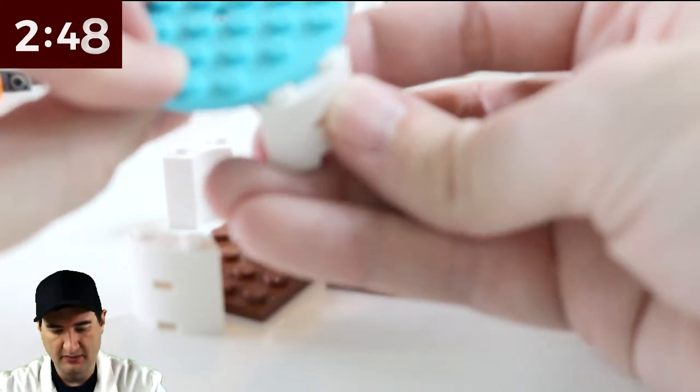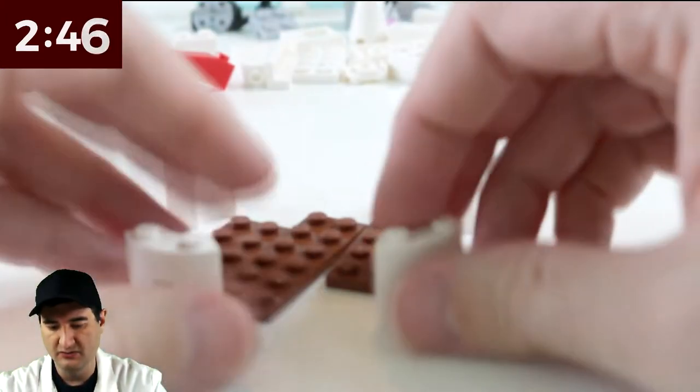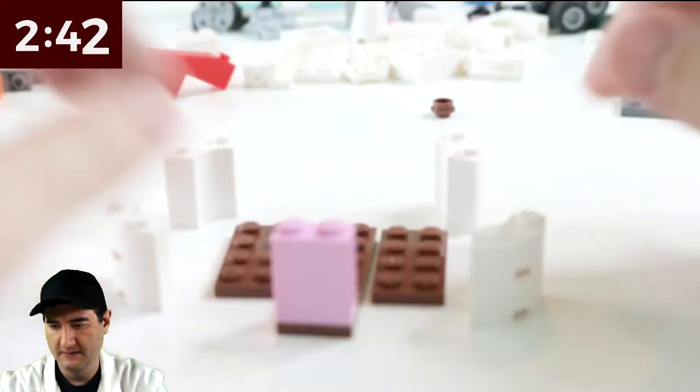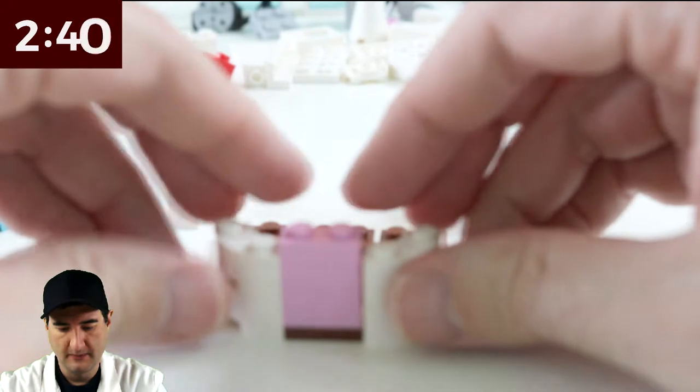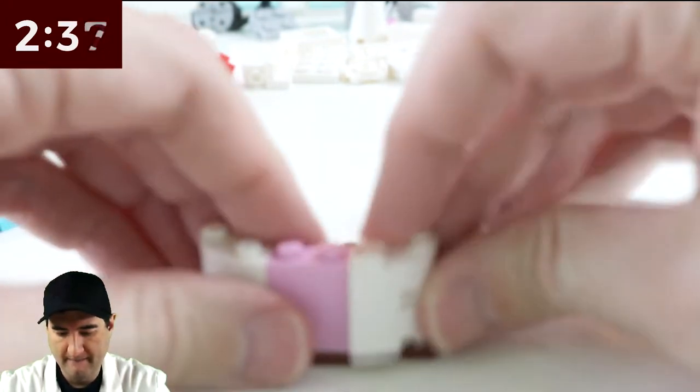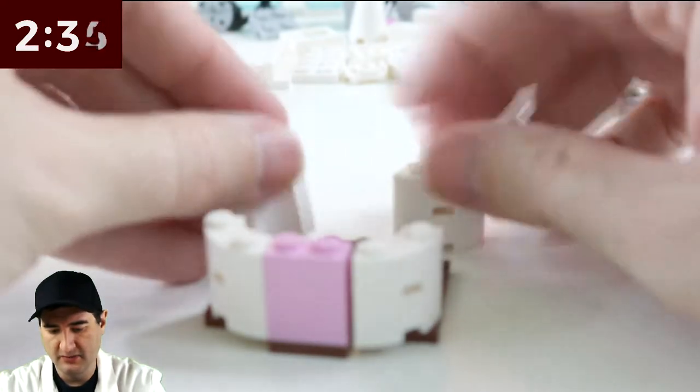So it's going to go there and then we need twos. We're going to need to have this there, that goes there, these go here.